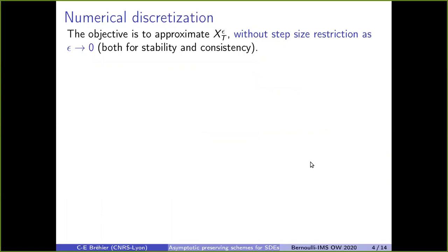What we want to do is to have a numerical approximation of X Epsilon at the final time T with no restriction on the time step size delta T when Epsilon goes to zero — so both for stability problems and consistency problems.